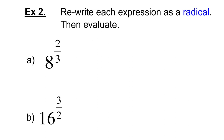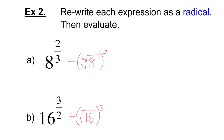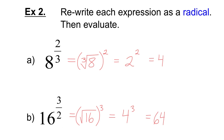So, see if you can rewrite each of these expressions as a radical and then evaluate. Pause the video and try this on your own. Here, I've rewritten each of these expressions as a radical. For the first one, it's the cubed root of 8 to the exponent 2. For the second one, it's the square root of 16 to the exponent 3. And now I can just use my calculator to figure out what the cubed root of 8 is, and then evaluate the expression. So, 8 to the exponent 2 thirds is equal to 4. Now, 16 to the exponent 3 over 2 was rewritten as this radical. The square root of 16 is 4. 4 cubed is 64. So, 16 to the exponent 3 over 2 is equal to 64.